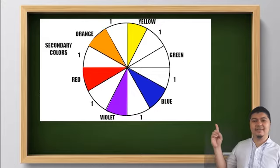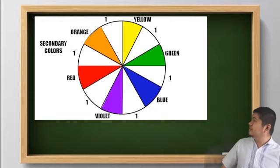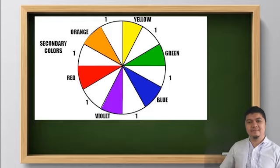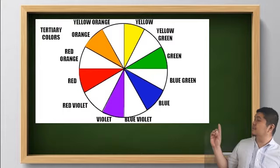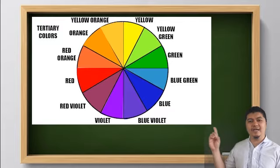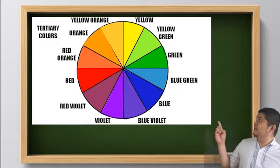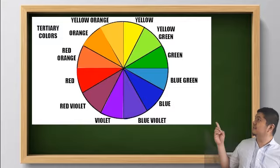Blue and yellow construct green. After that, create the tertiary colors in between one secondary and one primary color. For example, blue and green mixed together will create blue-green, and so on.